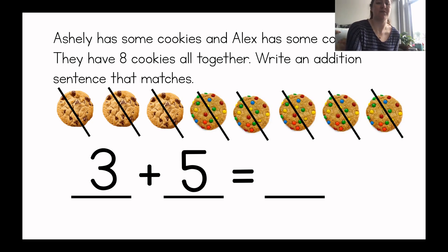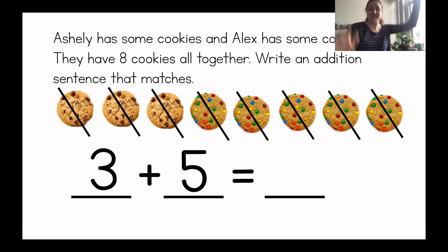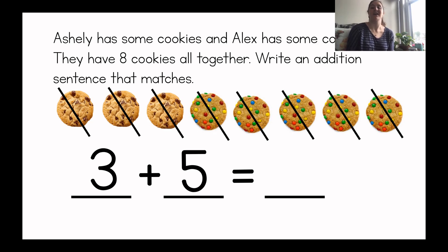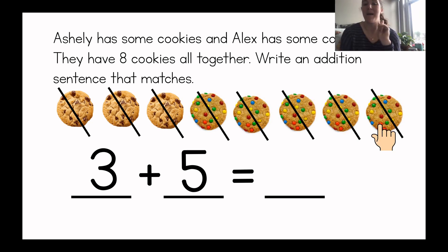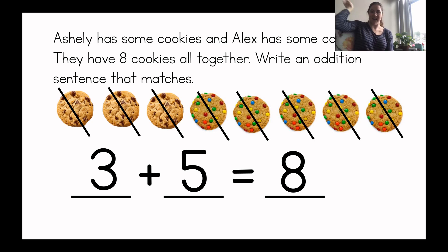All right, so let's read what we have so far. Three plus five equals — what do we need to count now? We need to count how many there are all together. How many cookies are there all together? I'll point and you can count with me. One, two, three, four, five, six, seven, eight — equals eight all together. So we'll write the number eight. Remember, to make an eight, you do an S diagonal. S diagonal.